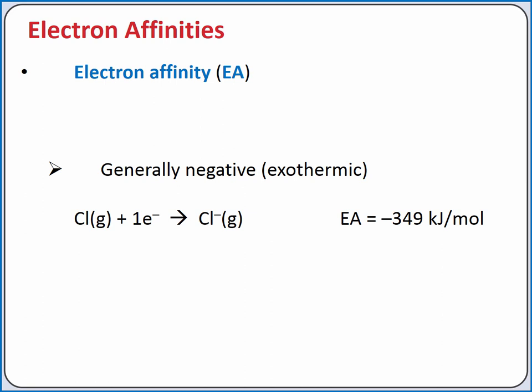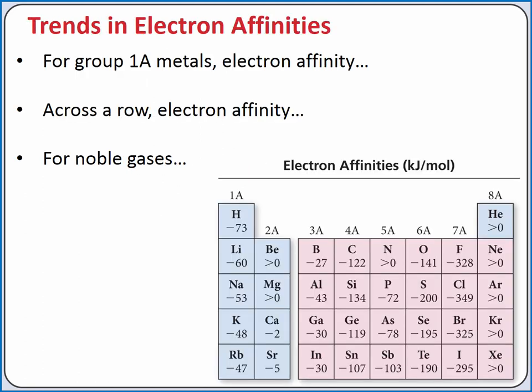We can represent this process using the equation shown, where the electron is a reactant being added to a chlorine gas atom. For Group 1A metals, electron affinity becomes less exothermic as we move down the column. Across a row, electron affinity generally increases.